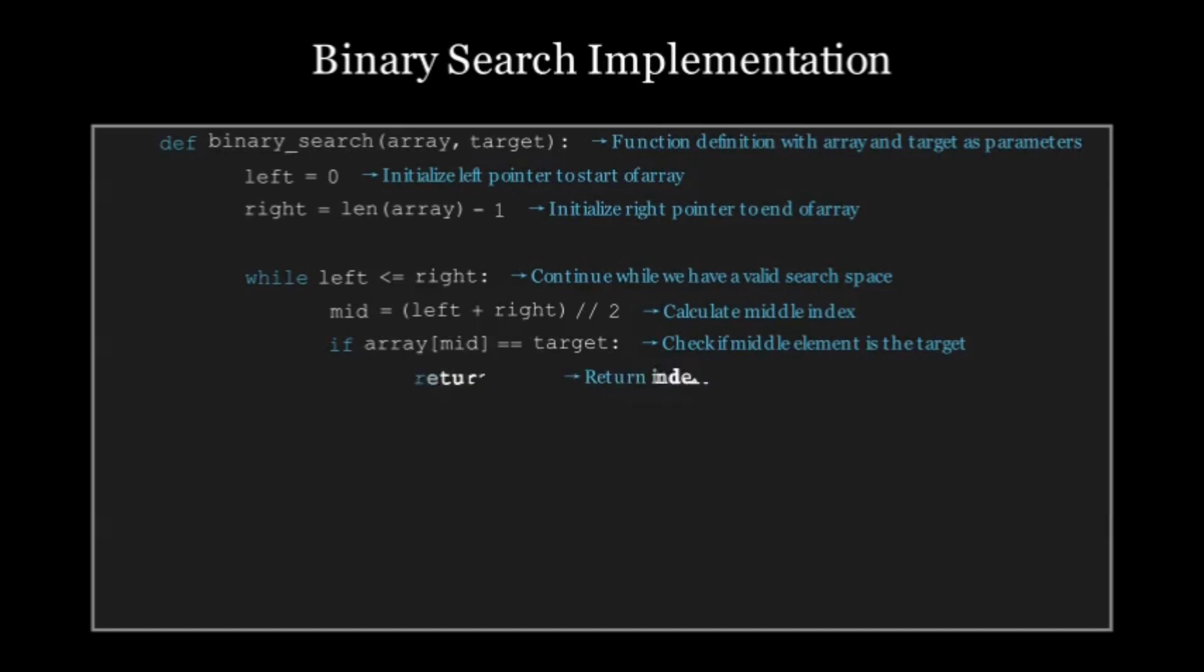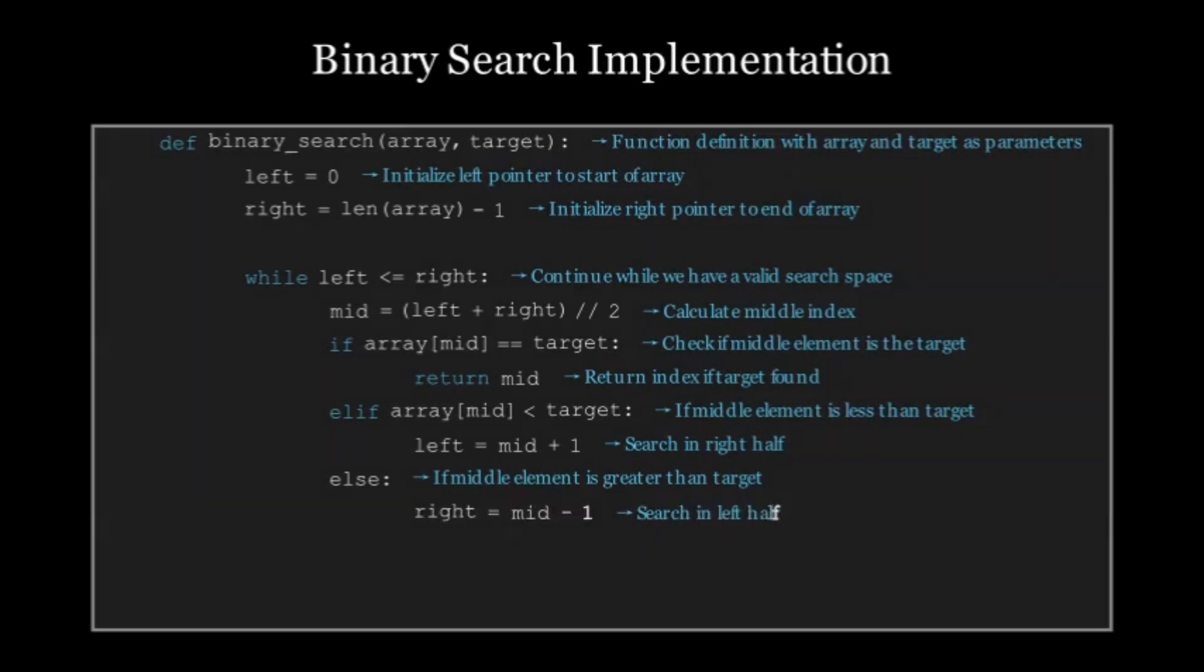If the middle element is the target, that is if array[mid] equals target, then return mid. We have found it and return the index. If the middle element is less than the target, that is elif array[mid] < target, then left = mid + 1. We move the left pointer to search the right half. And if the middle element is greater than the target, that is the else condition, right = mid - 1. We move the right pointer to search the left half.